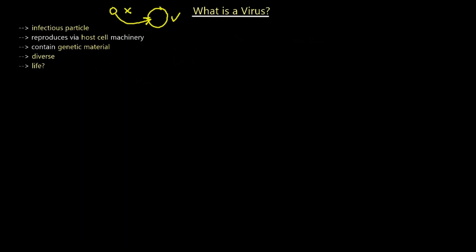Viruses are very diverse. To get an idea, many of them exist in the oceans as bacteriophages. There are 10 to the power of 31 bacteriophages in the ocean — meaning these viruses specifically infect bacteria as their host cell. That's a ginormous number: 31 zeros after the 10.